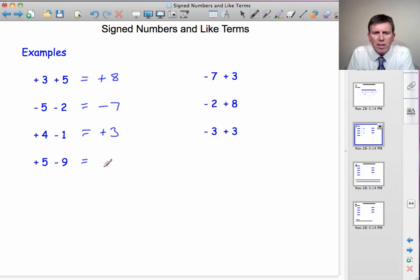Plus 5, take away 9. We've got more negatives, so the answer will be negative. How many more negatives? 9, take away 5, is 4. So that comes to minus 4.